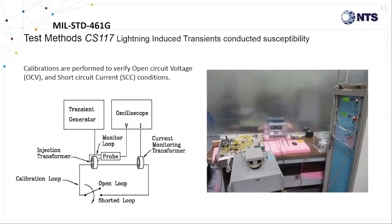The lightning waveforms are calibrated for open circuit voltage and short circuit current using an inductive coupling transformer. That photo shows a lightning transformer in the lower left-hand corner with a single turn shorting conductor positioned around its secondary.